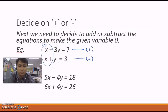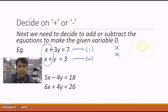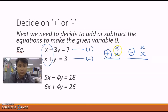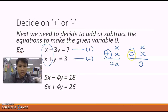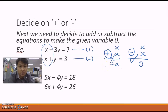Now we decide whether to add or subtract the equations. For the first example, we want to remove x. We can do a side working: x plus x gives 2x, and x minus x gives 0. Since minus gives us zero, we choose the minus operator. We will take equation 1 minus equation 2. Using plus would not remove x and would not help us simplify the question.